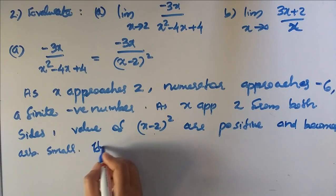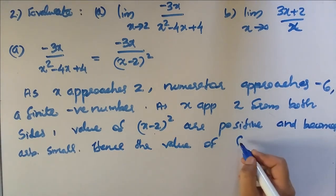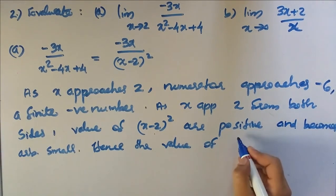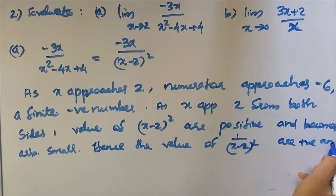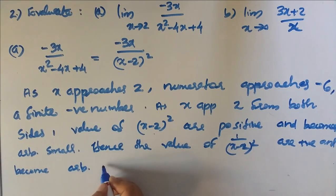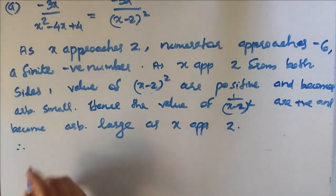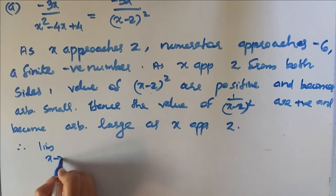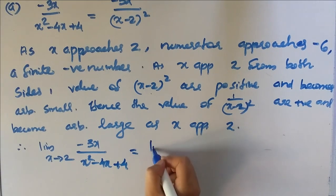The value of 1 by (x minus 2) all squared is positive and becomes arbitrarily large as x approaches 2.